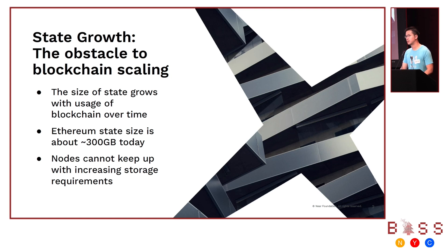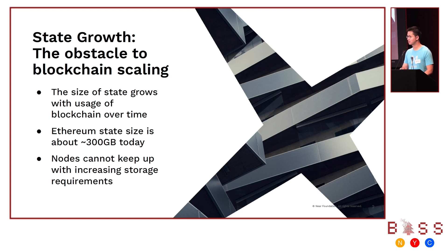Ethereum today has about 300 gigabytes of state, depending on how it's formatted and how you count it — on the order of several hundred gigabytes. And it's growing pretty fast. So the problem is that if this keeps growing, at some point the nodes will have trouble keeping up with the network. They need a lot more expensive hardware and it becomes much more difficult to operate.